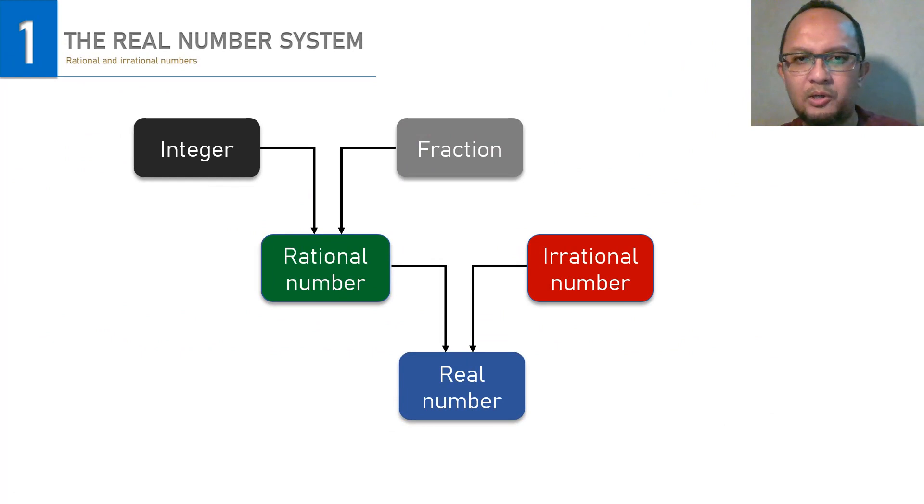Real numbers consist of two, rational and irrational. Rational means the numbers can be made as a ratio, like a per b, while irrational numbers cannot. Moreover, rational numbers can be expressed as an integer or a fraction of two integers.